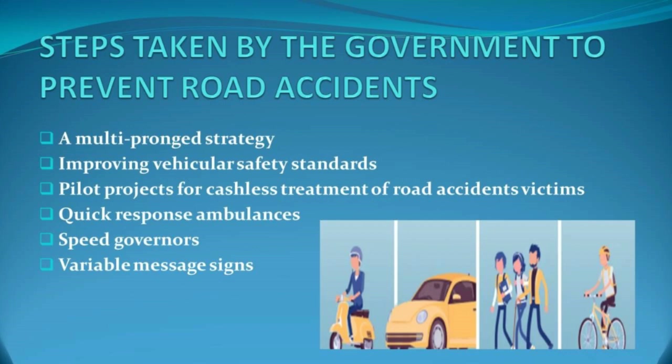Speed governors are devices with a series of sensors that detect how fast a vehicle is going; if speed crosses the set limit, it restricts the flow of air and fuel to the engine. Variable Message Signs are LED boards that display important information to commuters and can be used to update road users about traffic conditions in case of major breakdowns or congestions.